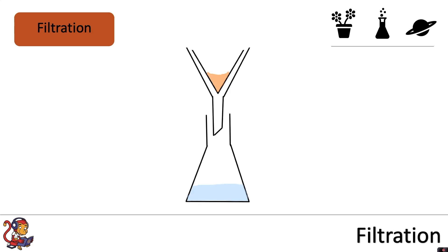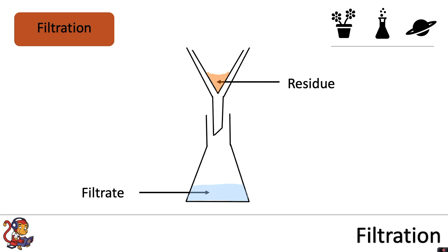This is what the experiment might look like if we've separated sand from water. The part that has fit through the filter paper is called the filtrate, and the insoluble part that didn't fit through the filter paper is called the residue.